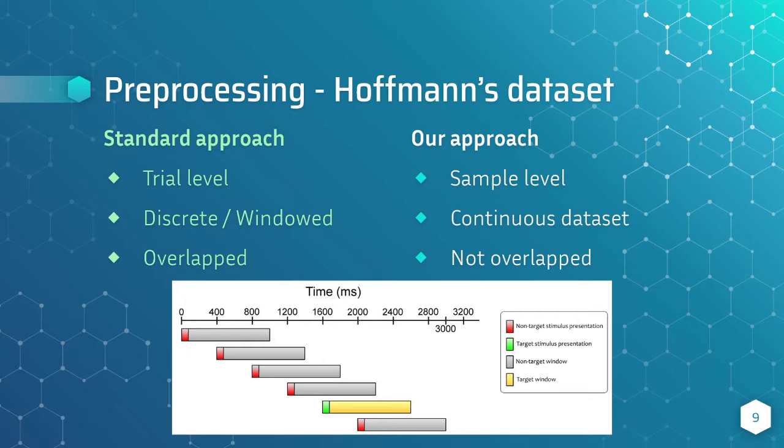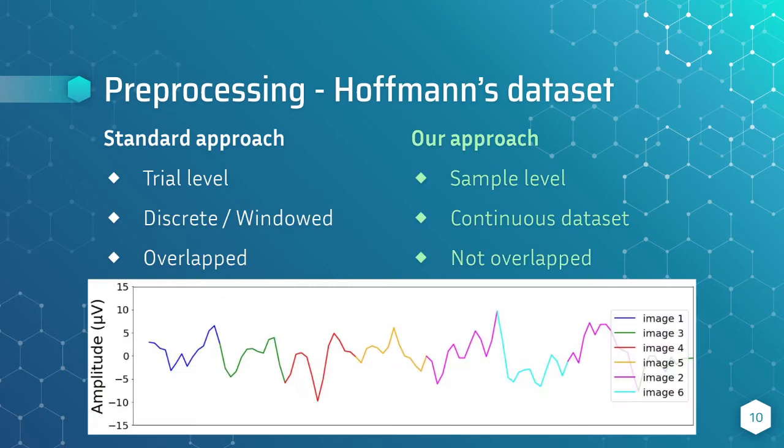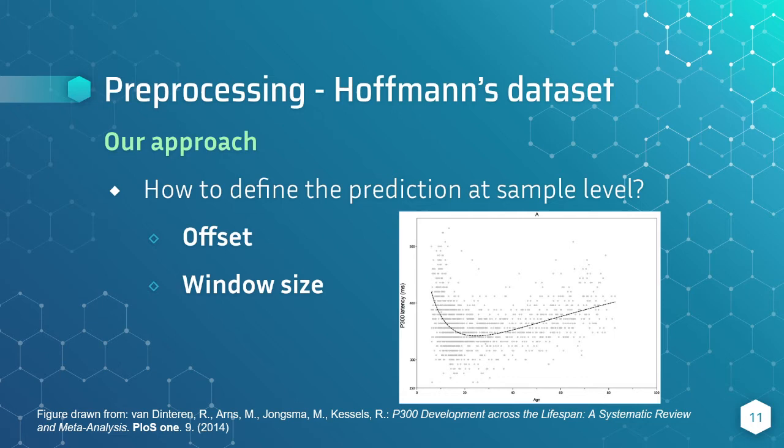Creating one-second windows is a good strategy when we don't use temporal series models, but this causes some troubles when we train recurrent neural networks. So our preprocessing is much simpler. We directly use the continuous signal to avoid the overlapping. However, now the model must learn to predict something in a continuous way, at each sample.